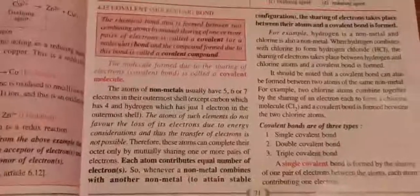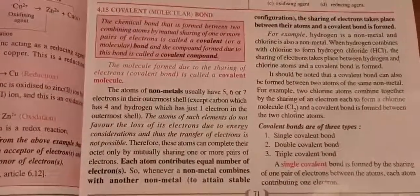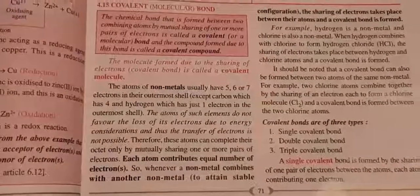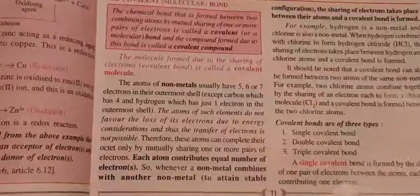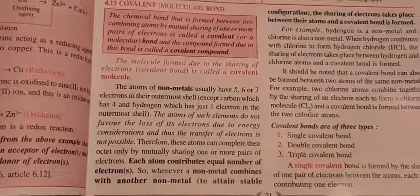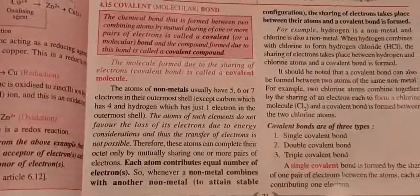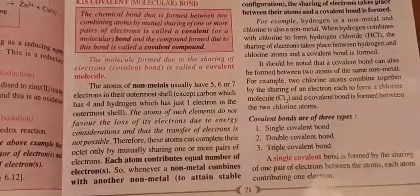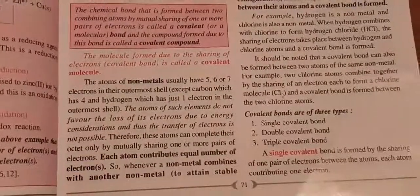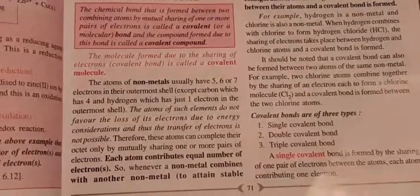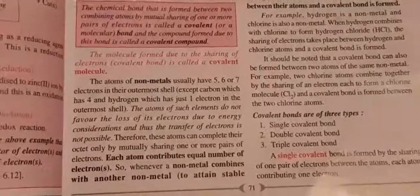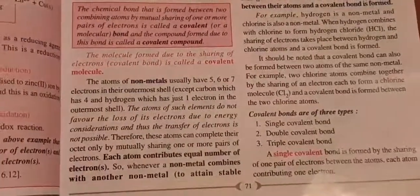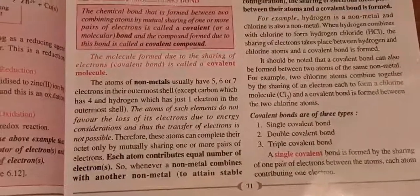Metals and non-metals generally combine and form the ionic compound, but when non-metal and non-metal combine, what happens? Both of them have a tendency to gain electrons. None of them is going to transfer electrons. So generally non-metals, where they have 5, 6, 7 electrons in the outermost shell — they do not lose electrons and thus they don't even transfer electrons.